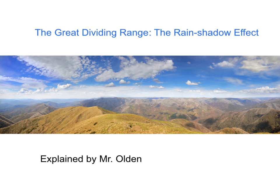Welcome to Mr Olden's explanation of the Great Dividing Range and the rain shadow effect, and just how this influences the type of natural environments found here in Australia. This provides a prime example of the position and aspect factor that affects natural environments.